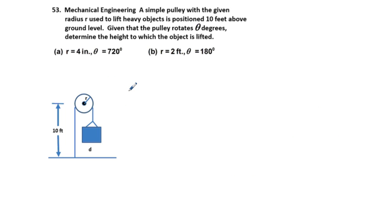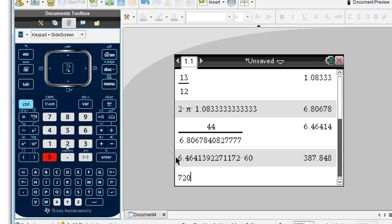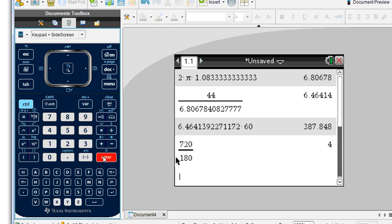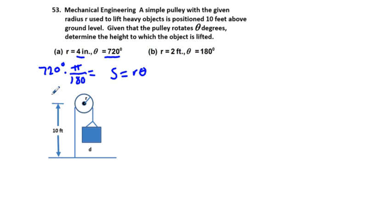Problem 53: mechanical engineering. A simple pulley with given radius r is used to lift heavy objects and is positioned ten feet above ground level. Given the pulley rotates theta degrees, determine the height to which the object is lifted. We use the arc length formula s = rθ, but our theta is in degrees. For part A, theta is 720 degrees, and converting to radians: 720 × π/180 = 4π radians.